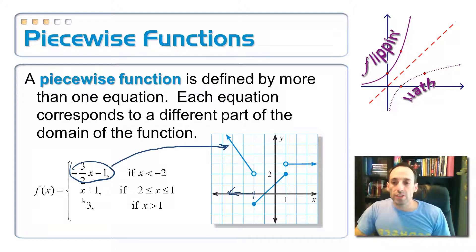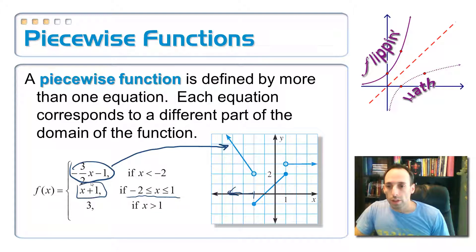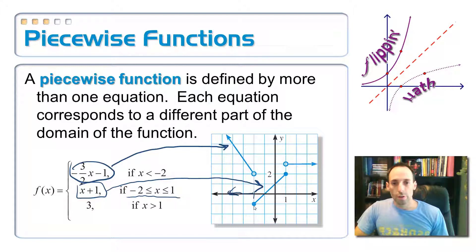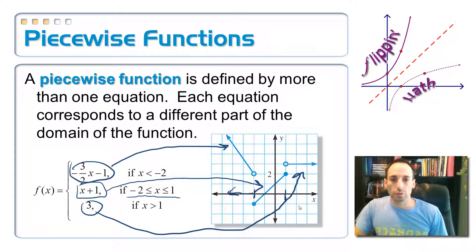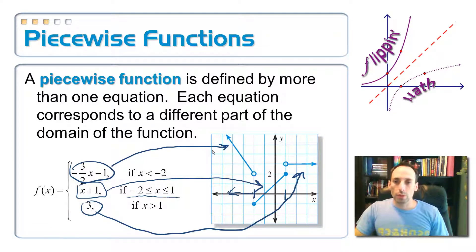Then there's the second part: x plus one. That only works for x-values between negative two and positive one — that's this portion of the graph from negative two to positive one. And finally, we have just the constant y equals three, as long as x is greater than one. So we're talking about everything to the right of one. That's what a piecewise function looks like, both the equation and the graph.